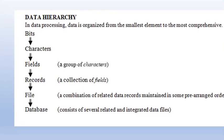The data hierarchy is an arrangement from smallest to largest element. In data processing, data is organized from the smallest element to the most comprehensive. We have: bit (smallest), characters, fields (a group of characters), records (a collection of fields), file (a combination of related data records maintained in some prearranged order), and database (the largest — consists of several related and integrated data files). That hierarchy is very crucial.